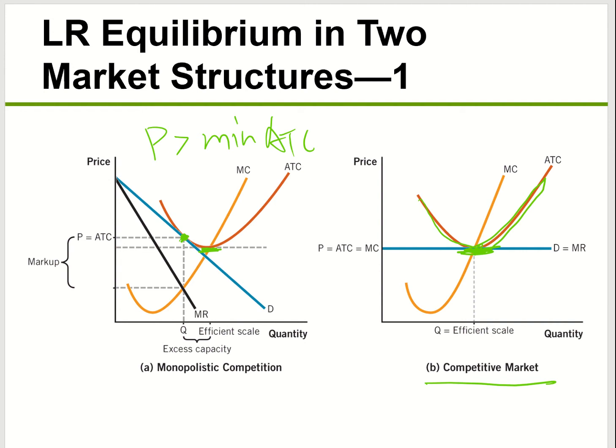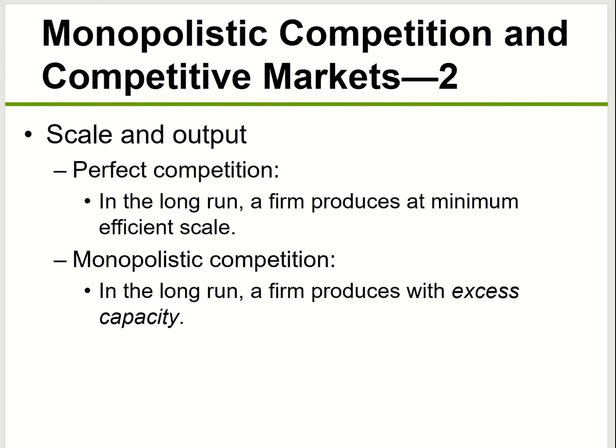There is also something called excess capacity. For this market, they can produce more. If you produce more, they would have a lower average total cost, but they choose not to because the company is producing where marginal cost equals marginal revenue. This difference is called the excess capacity — the company could produce more and lower average total cost, but if they do, they'll lose money.